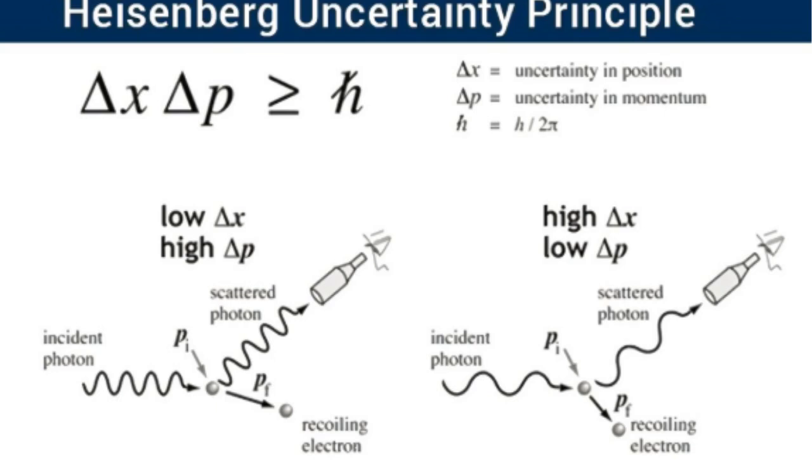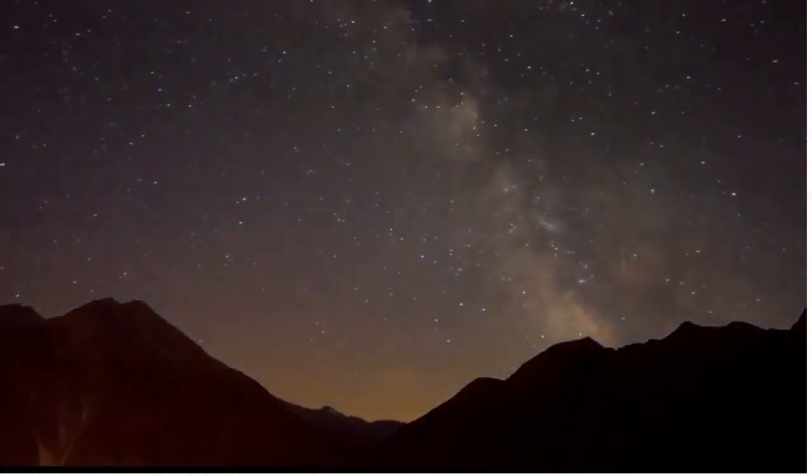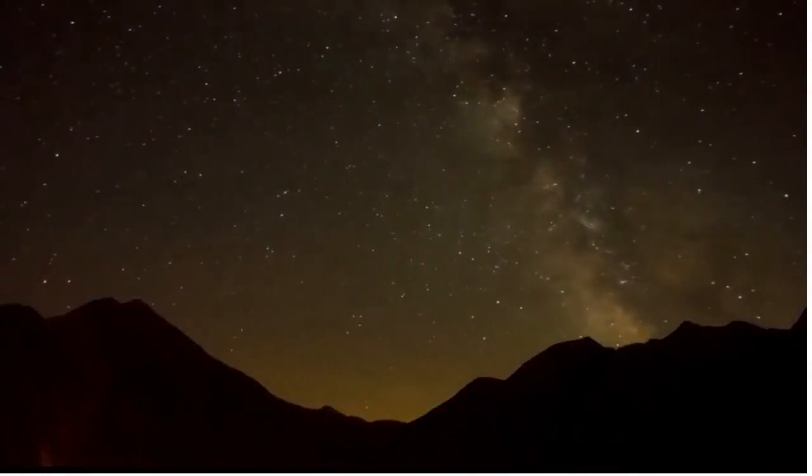Then came Werner Heisenberg with the uncertainty principle, showing that you can never precisely know both the position and speed of a particle at the same time. The more accurately you measure one, the fuzzier the other becomes. This shattered the classical idea of a predictable, clockwork universe.